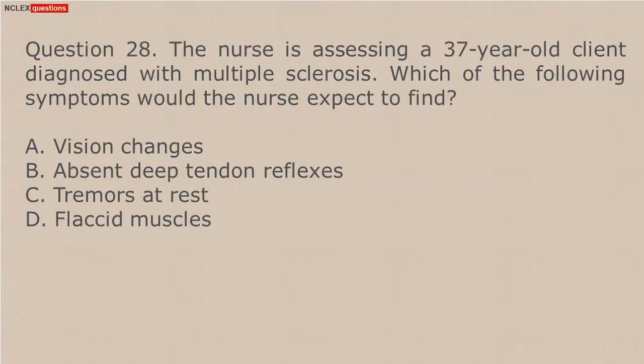Question 28. The nurse is assessing a 37-year-old client diagnosed with multiple sclerosis. Which of the following symptoms would the nurse expect to find? A. Vision changes. B. Absent deep tendon reflexes. C. Tremors at rest. D. Flaccid muscles.